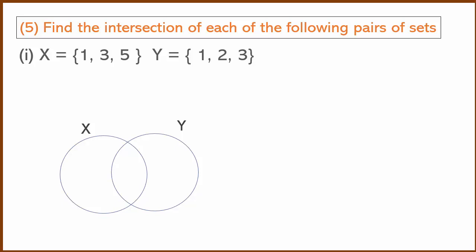X's first element is 1, and Y also has 1, so that's the same. X's second element is 3, which is also in Y. X's third element is 5, but Y doesn't have 5, so it can't be in the intersection.